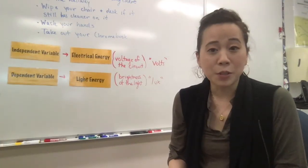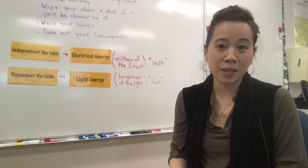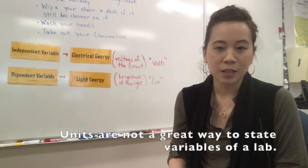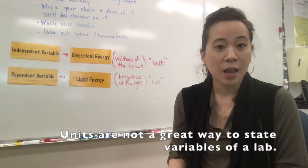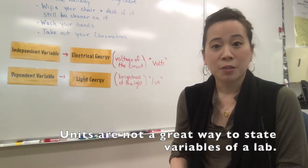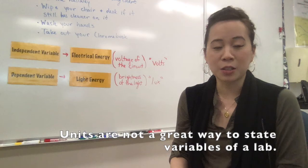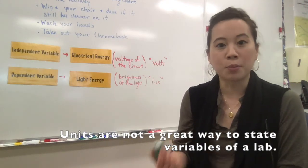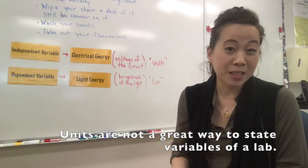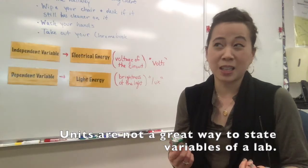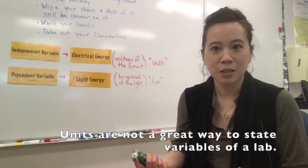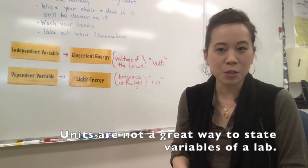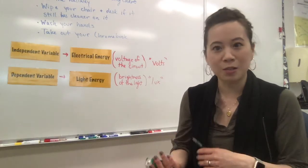It might be worth noting that you wouldn't refer to the independent and dependent variable by units. Like you wouldn't say that the independent variable was the volts of the circuit and the dependent variable was the lux of the light. Rather, you would actually talk about it in terms of voltage or brightness. Because it doesn't make sense, for example, to say instead of saying the distance of ball rolls, you wouldn't say something like the centimeters. So make sure you distinguish between the variable and the units for the variable.